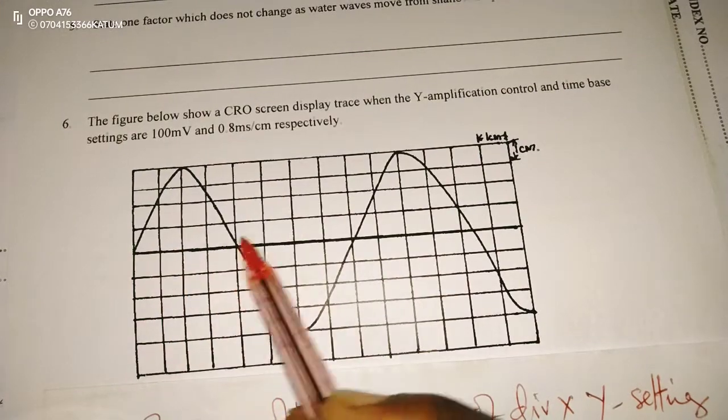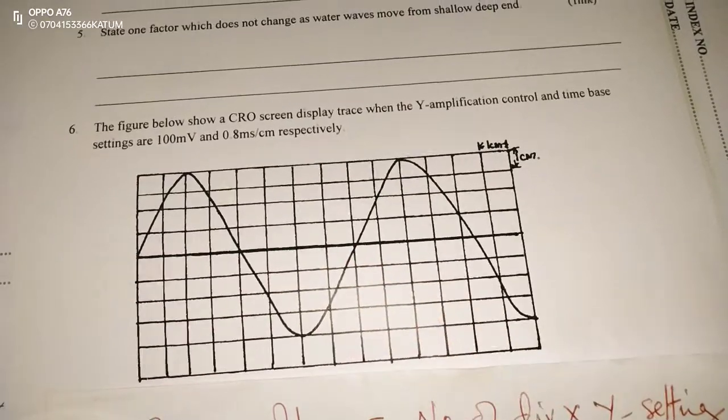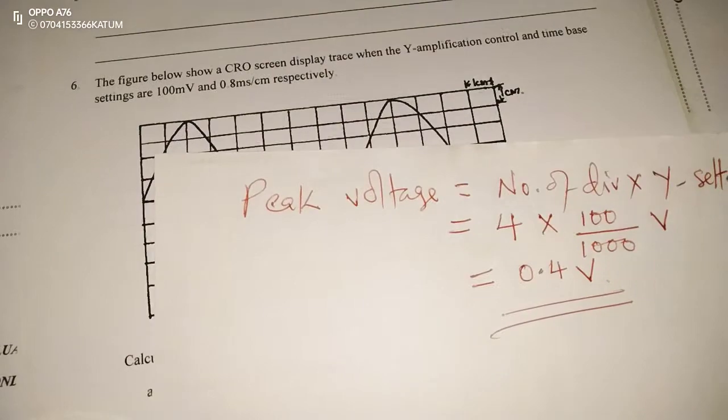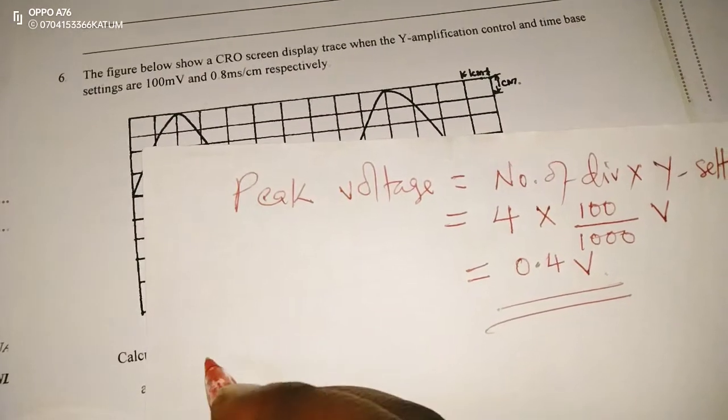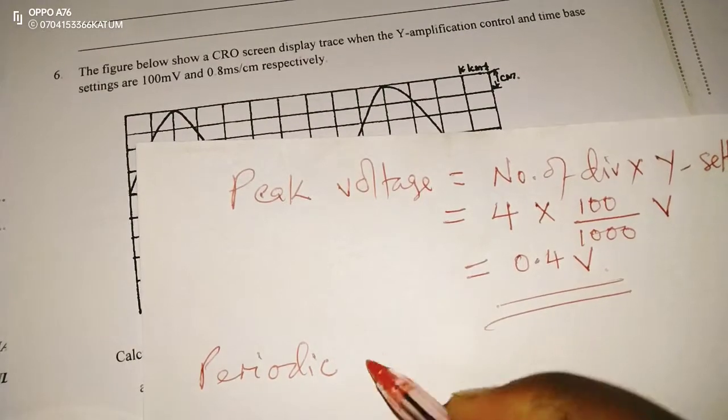...then we are having 1, 2, 3, 4, 5, 6, 7, 8 divisions in one cycle, or rather, one oscillation. Then we are going to have periodic time first. Remember, we are getting frequency.